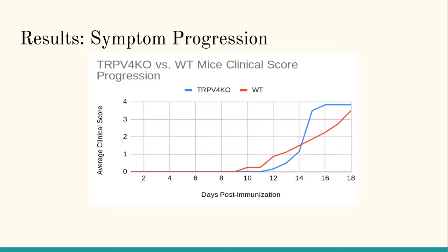To back up the qualitative data, I plotted the symptom progression — the clinical scoring of the mice I took tissue from — throughout their symptom progression and lifespan. I found that there's no significant difference as to whether the mouse has TRP-V4 or not, with either their day of symptom onset or their final clinical score. So there's no difference between the two groups overall, showing that, at least with this measure, the difference is statistically insignificant.